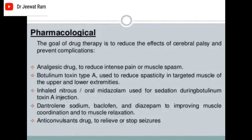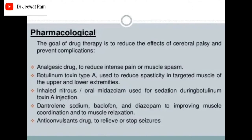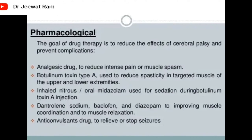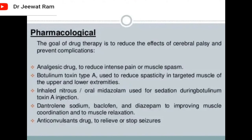Pharmacological treatment of cerebral palsy: the goal of drug therapy is to reduce the effects of cerebral palsy and prevent complications. Analgesic drugs reduce intense pain or muscle spasm. Botulinum toxin type A is used to reduce spasticity in targeted muscles of the upper and lower extremities. Inhaled nitrous oxide or midazolam is used for sedation during botulinum toxin injection. Dantrolene sodium, baclofen, and diazepam are used to improve muscle coordination and muscle relaxation. Anticonvulsant drugs relieve or stop seizures.